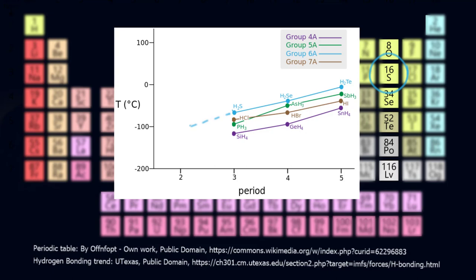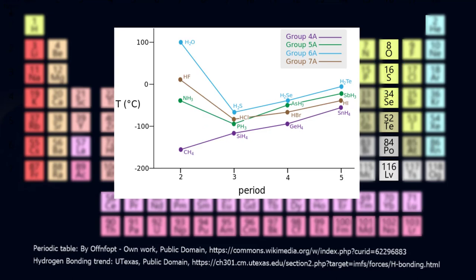Which gives you a boiling point of minus 100 degrees for dihydrogen monoxide. But it turns out that this is not a good prediction. We know that dihydrogen monoxide is water and actually has a boiling point of about positive 100 degrees.